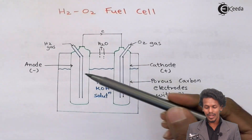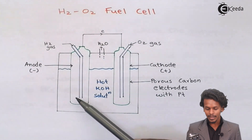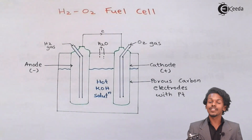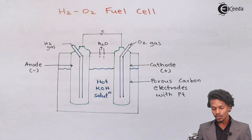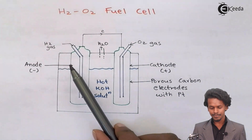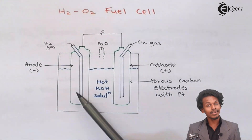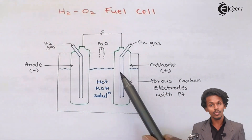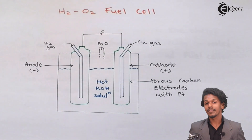Since both H₂ and O₂ are gases connected through the porous carbon electrodes, they bubble out through them. The porous electrodes also act as filters, so pure H₂ and pure O₂ can participate in the overall reaction to generate electricity. H₂ at the anode undergoes oxidation, ejecting electrons that flow to the cathode, generating electricity.